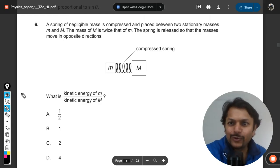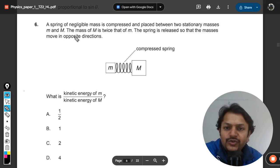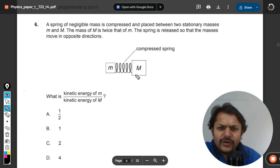A spring of negligible mass is compressed and placed between two stationary masses, one is small m another is capital M. The mass capital M is twice that of m. The spring is released so that the masses move in opposite directions.